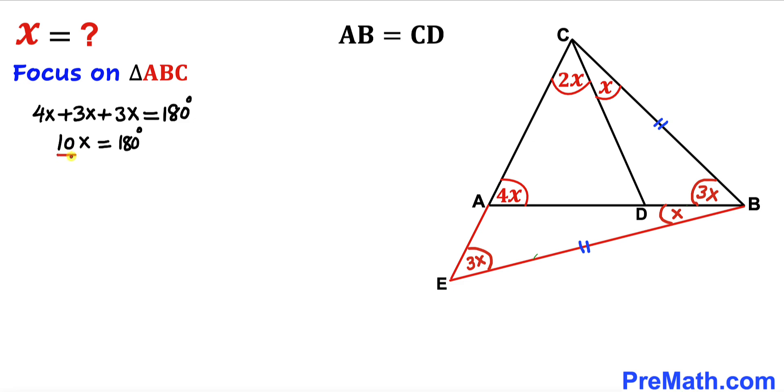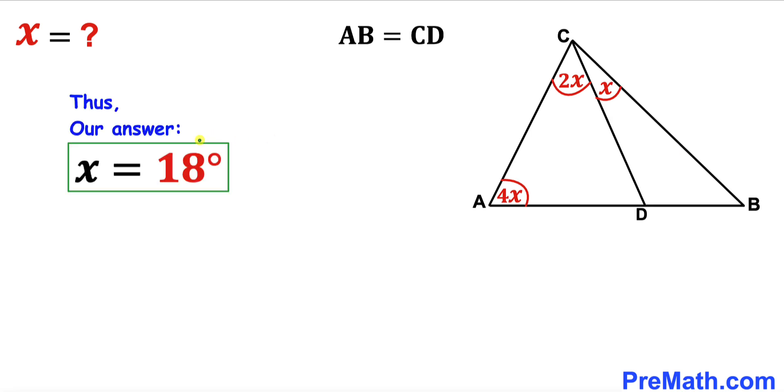Now let's divide both sides by 10 to isolate X. Therefore, our angle X turns out to be 18 degrees. That's our final answer.